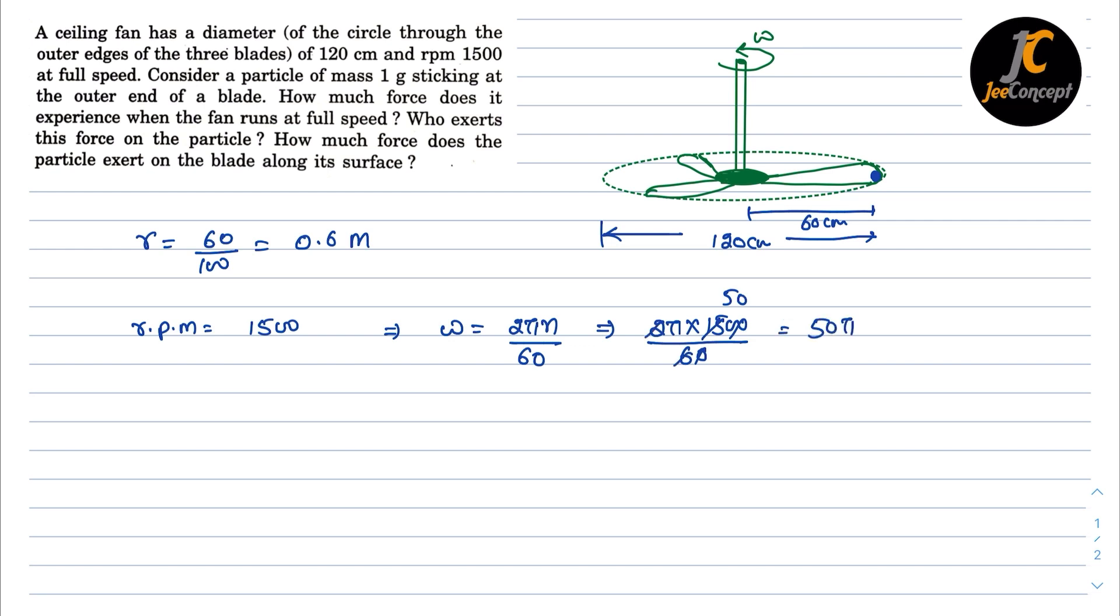50π. Now the mass of this particle is 1 gram or I can say 1 × 10⁻³ kg. So the outward force acting on this object is going to be mv²/r, which is centrifugal force. This is the only force it will experience when the fan is running at its highest speed. So for part first,